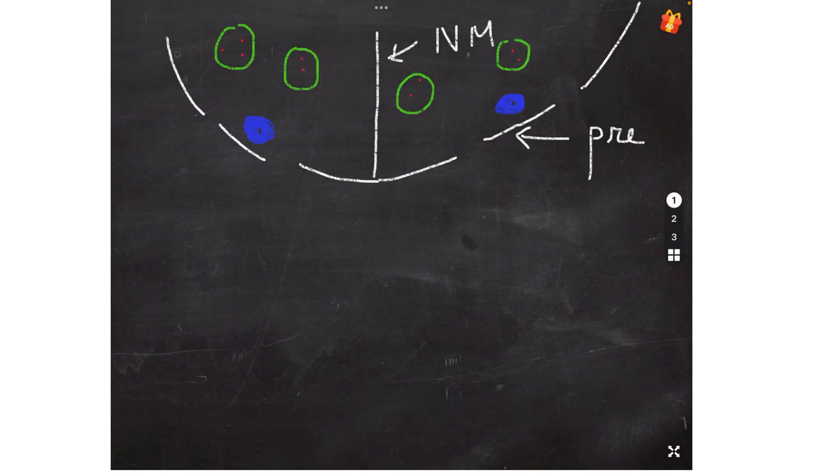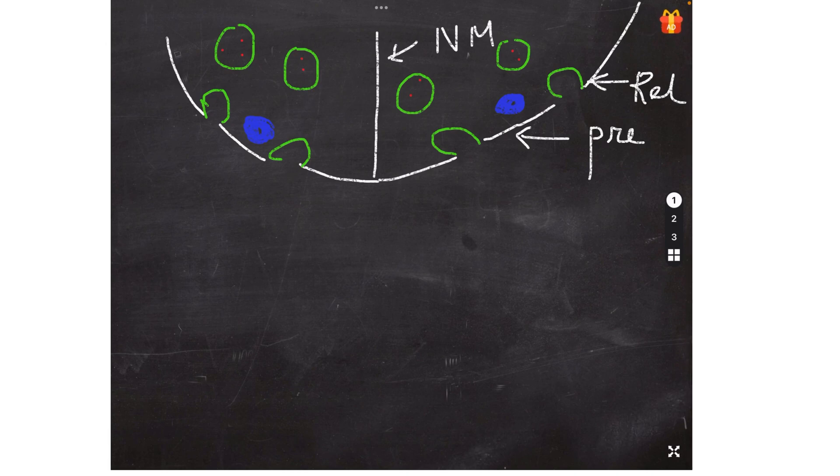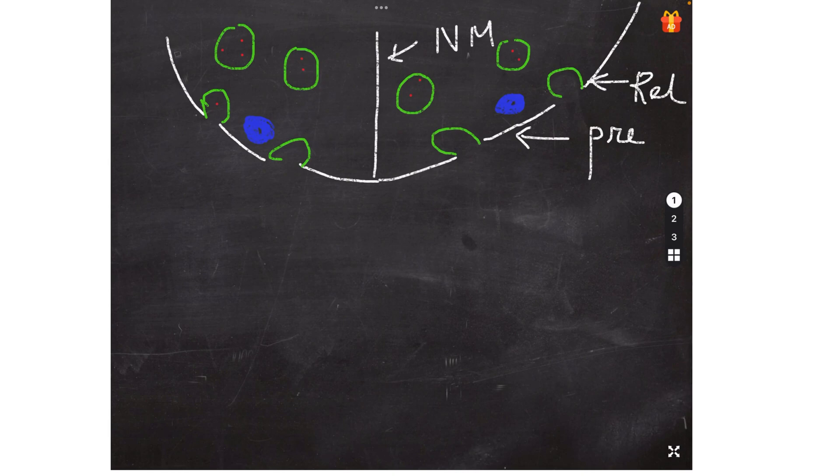So these synaptic vesicles, they come here at the release sites. So the gaps I have drawn, these are called the release sites. The synaptic vesicles will come here and empty their contents. The contents are obviously the acetylcholine into the junction.